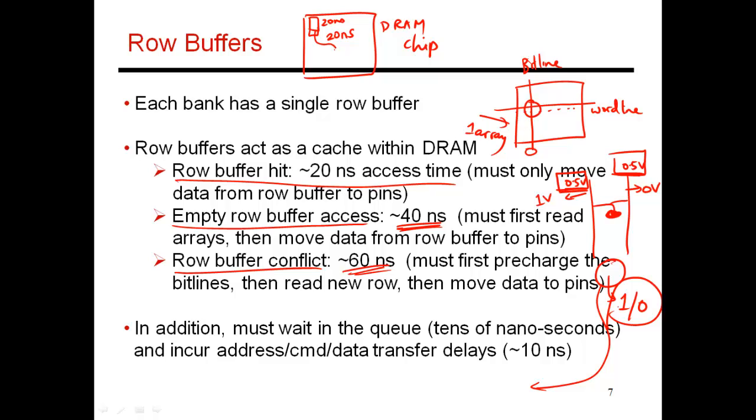And in addition to this delay, you also spend delay in other parts of the memory system. So you have to spend some time moving the data from the output pins back on this memory channel. And as I said earlier, it takes about four cycles to do that transfer. It also takes a few cycles to transfer the address and the command and so on. So there's about 10 nanoseconds worth of delay to transfer all of this data across the bus.